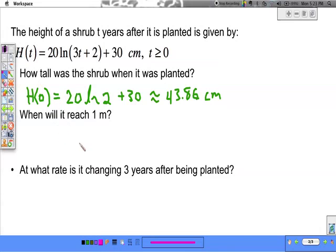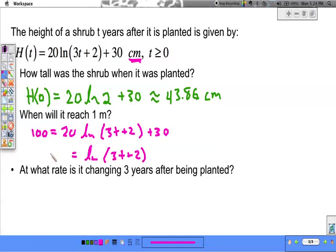Now if you're like me, your first instinct was to put 1 for h of t. But you've got to note that this is centimeters. So it's got to be 100 equals 20 times the natural log of 3t plus 2 plus 30. So the natural log of 3t plus 2 is going to equal 7 halves. Subtract 30 and divide by 20.